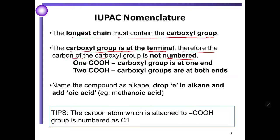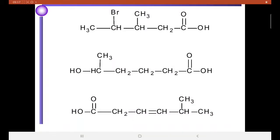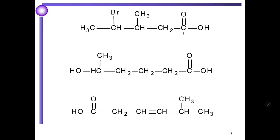When we have two COOH, the carboxylic acids are at both ends. Name the compound as alkane, drop the E in alkane and add -oic acid. Example: methanoic acid. The carbon atom which is attached to the COOH is numbered as C1. For structure number one, we have carboxylic acid as carbon number one. We have methyl at carbon number three and bromine at carbon number four. So the name for structure number one is 4-bromo-3-methyl-pentanoic acid.